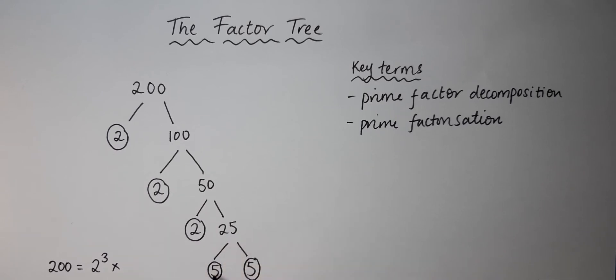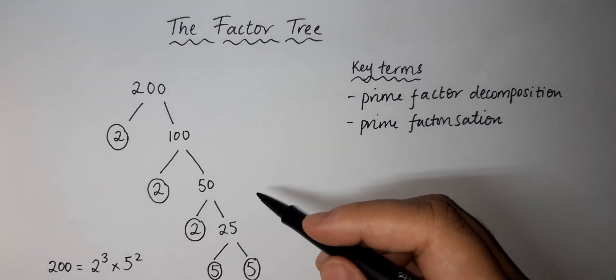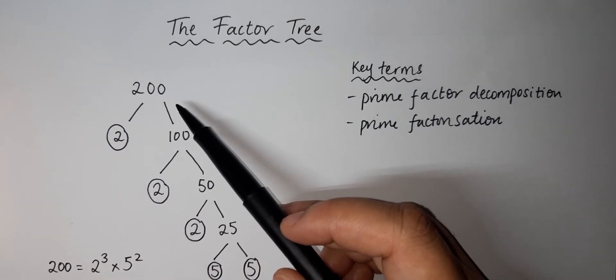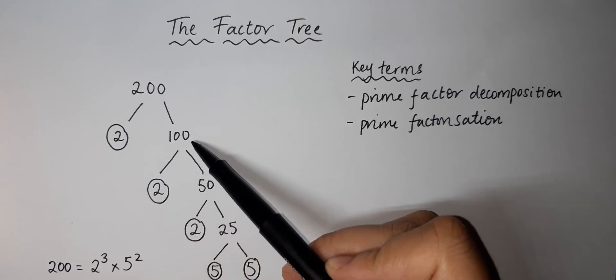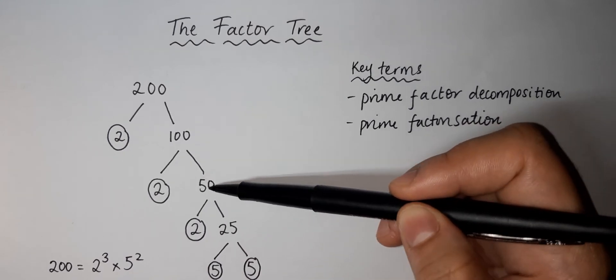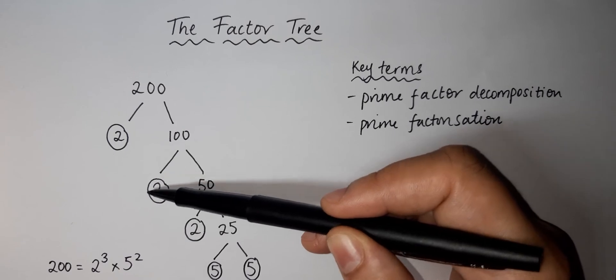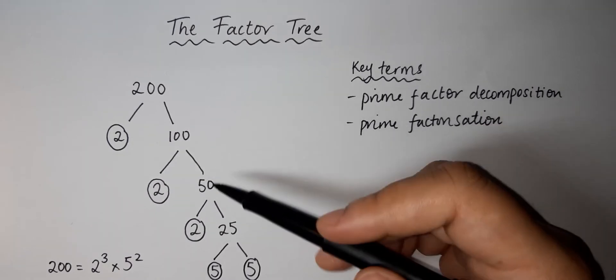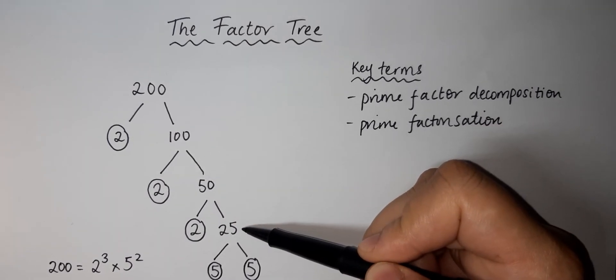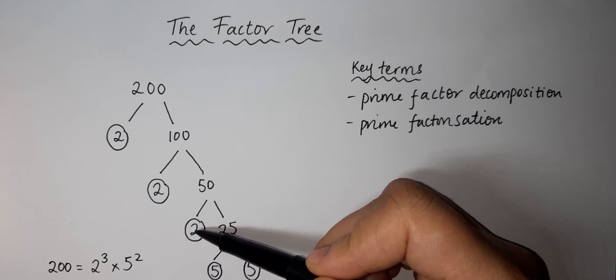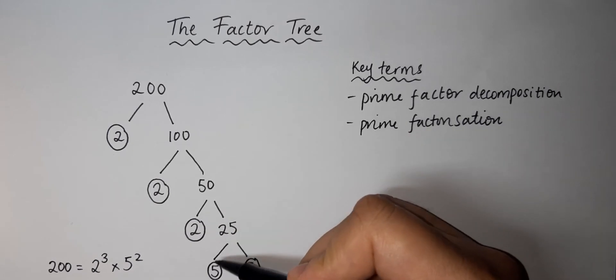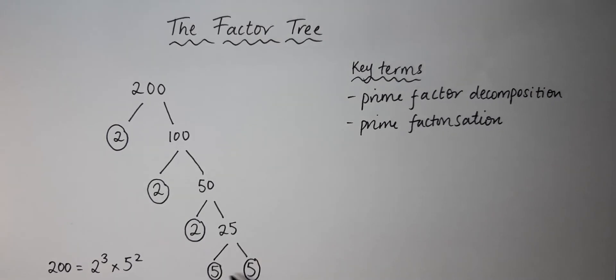Let's recap from the top. 200 can be written as 2 times 100. 2 is prime, so we circle it and look at 100. 100 can be 2 times 50, and again 2 is prime so we circle it. 50 can be written as 2 times 25. Again there's a 2, so we circle it. 25 can be written as 5 times 5. Both 5s are prime numbers, which means we circle them and stop. Then we can rewrite 200 as 2 cubed times 5 squared.